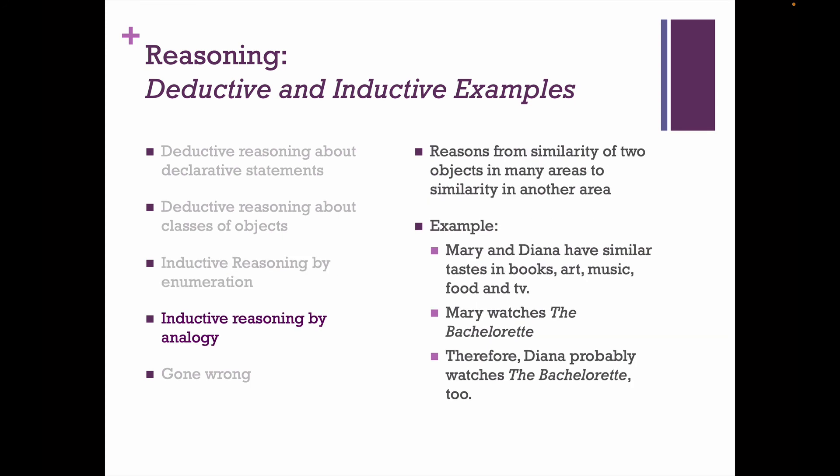You can also do inductive reasoning by analogy, which reasons from the similarity of two objects in many areas to their similarity in another area. Say I have friends Mary and Diana who have similar tastes in almost everything — books, art, music, food, TV. If Mary watches The Bachelorette, we can conclude Diana probably watches it too, because we've stipulated they have similar tastes in almost everything. If Mary likes it, the chances are Diana does too. It's not certain, but it is probable.